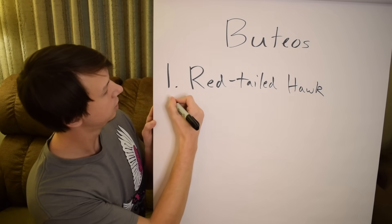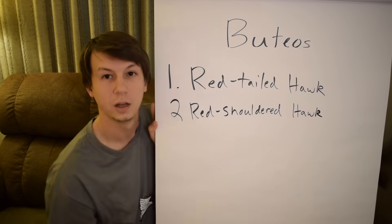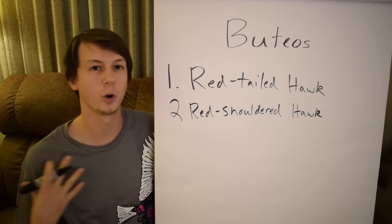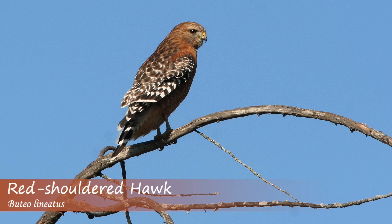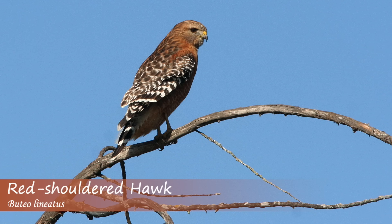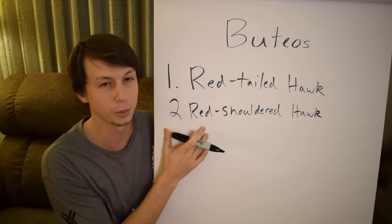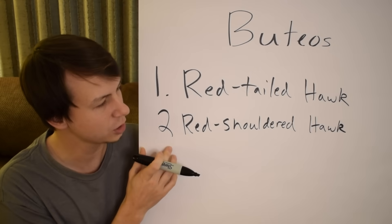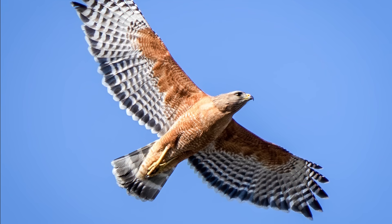Next up is the red-shouldered hawk. In adults it can be defined by their reddish shoulders — sometimes more or less red, kind of a reddish-orange. They will also have a banded tail and black-and-white checkered wings. Sometimes in flight you can see little wing crescents — translucent areas — though other hawk species can have these too. They're mainly found in the east but there are some populations on the west coast, and in certain areas this is the most common hawk. They also often like to be by water.